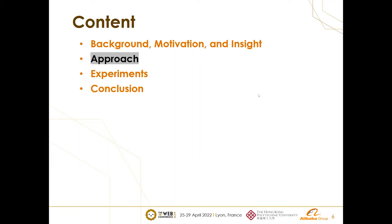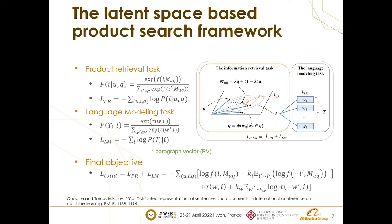We adopt a typical latent space-based generative framework for product search, which learns all embeddings with two tasks. The first task is a product retrieval task for the retrieval model, and the other is a language modeling task for better semantic matching. In the retrieval task, the most relevant products are retrieved by matching product embeddings with the current context, which is a mix of query and the user's preference. The language modeling task aims to learn the embeddings of queries and products by modeling text information.